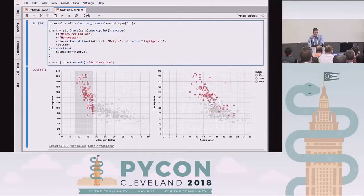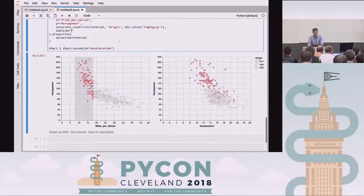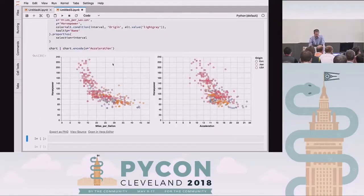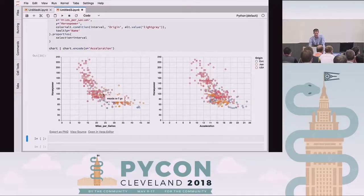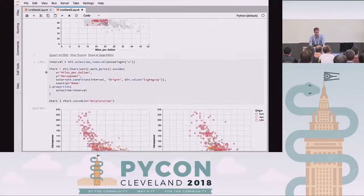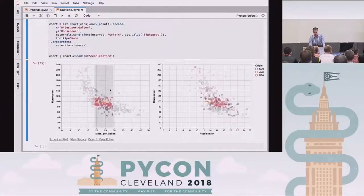You can do other interactions too. If you want the tooltip — tooltip equals the name of the car — now if we're interested in what any point is, we can get the name of the car just by hovering over it. This is 10 lines of code: 10 lines of code for a linked brush across a multi-panel scatterplot with tooltips.